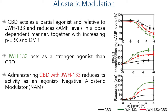Now let's look at the results from these studies. The researchers first looked at the activity of CBD, JWH-133, and the combination of these two molecules together, assessed using the previously described assays. They saw that CBD acts as a partial agonist relative to JWH-133, reducing cyclic AMP levels in a dose-dependent manner, increasing phosphorylated ERK, and causing a change in dynamic mass distribution. JWH-133 acts as a much stronger agonist than CBD due to its stronger binding in the CB2 receptor. Most interestingly, the combination of CBD with JWH-133 showed a reduction in activity, indicating that CBD is acting as a negative allosteric modulator by reducing the activity of JWH-133.